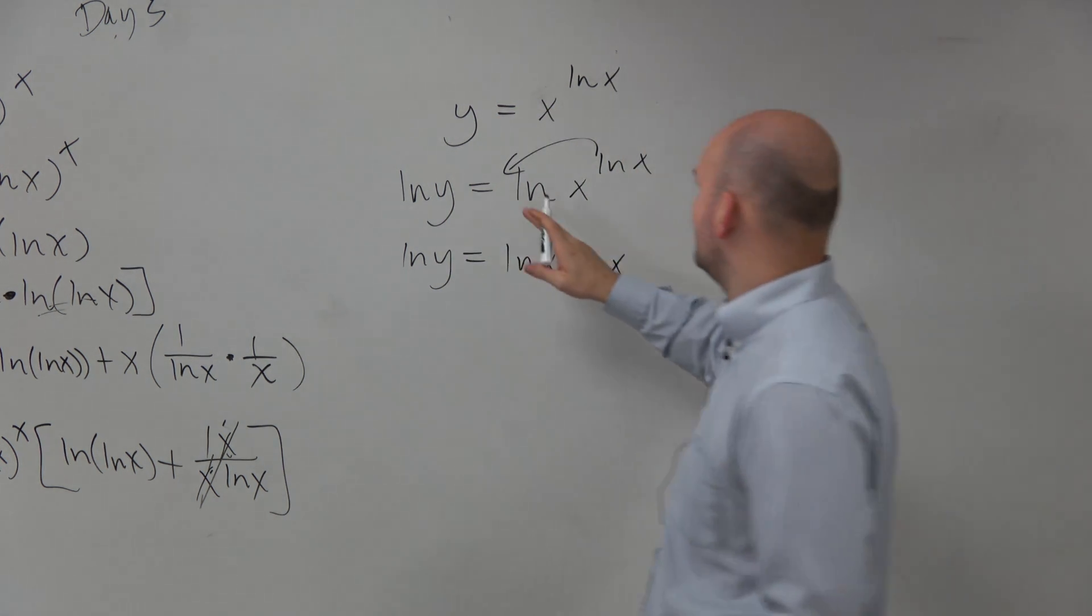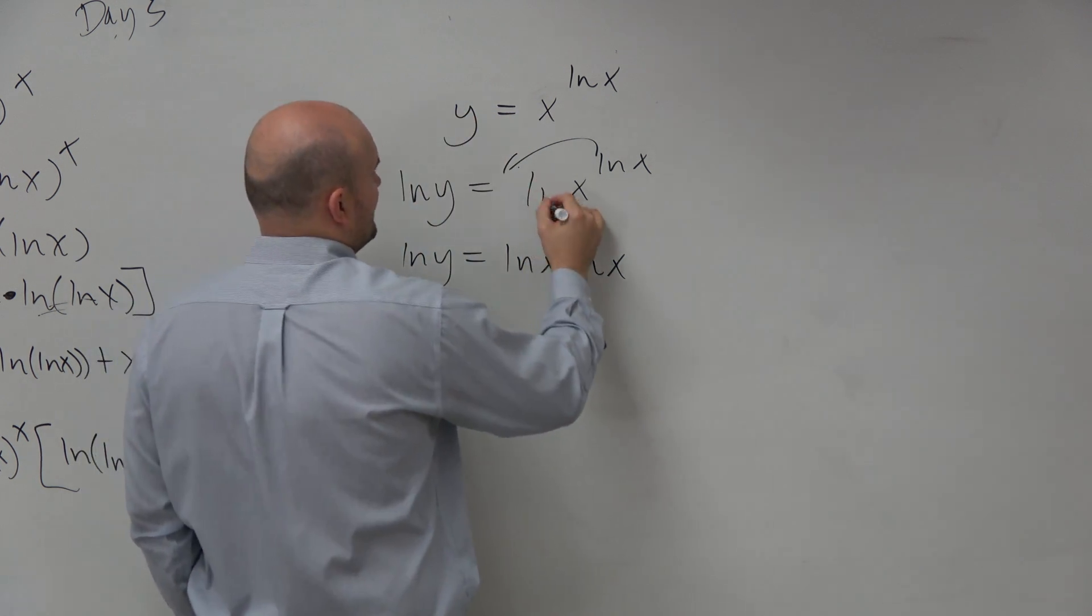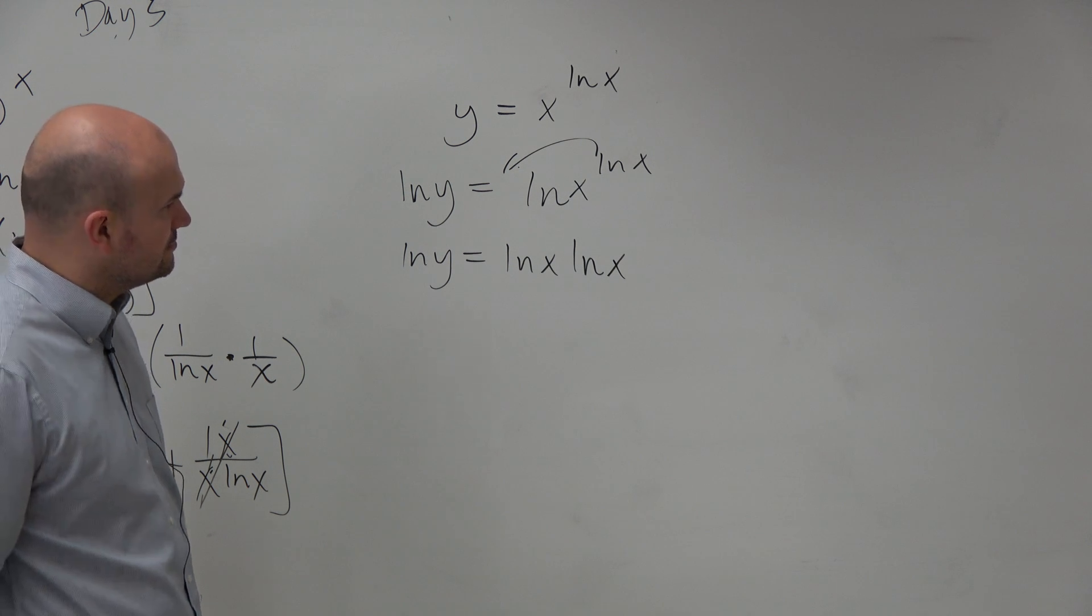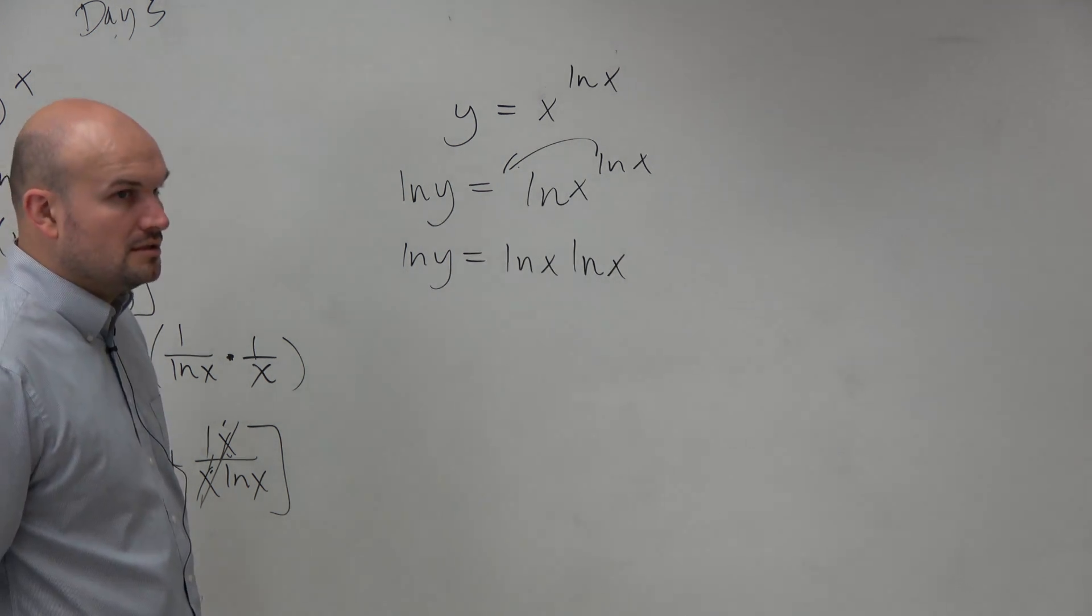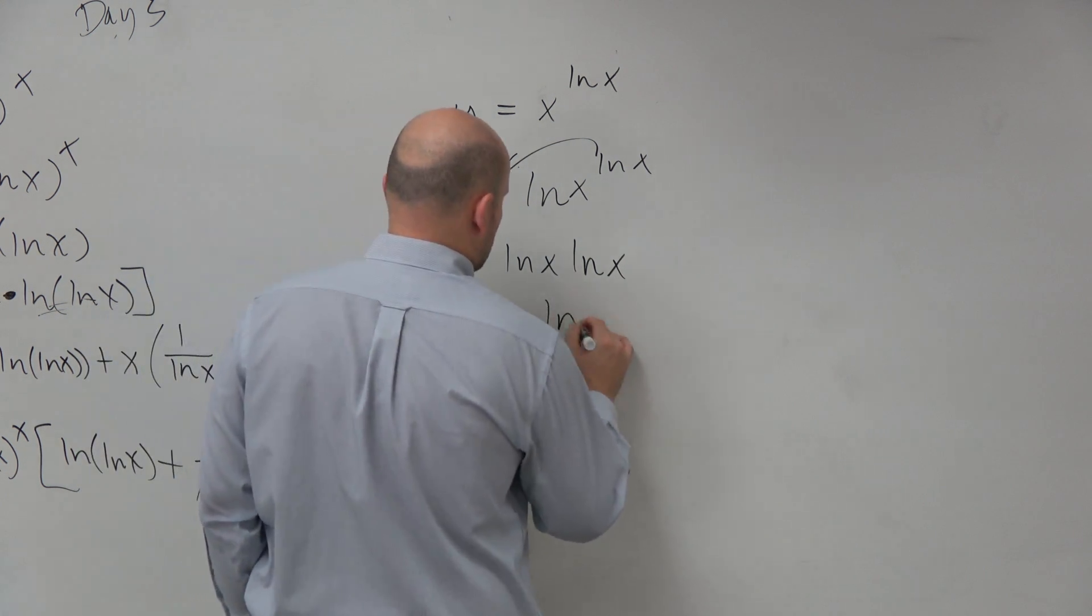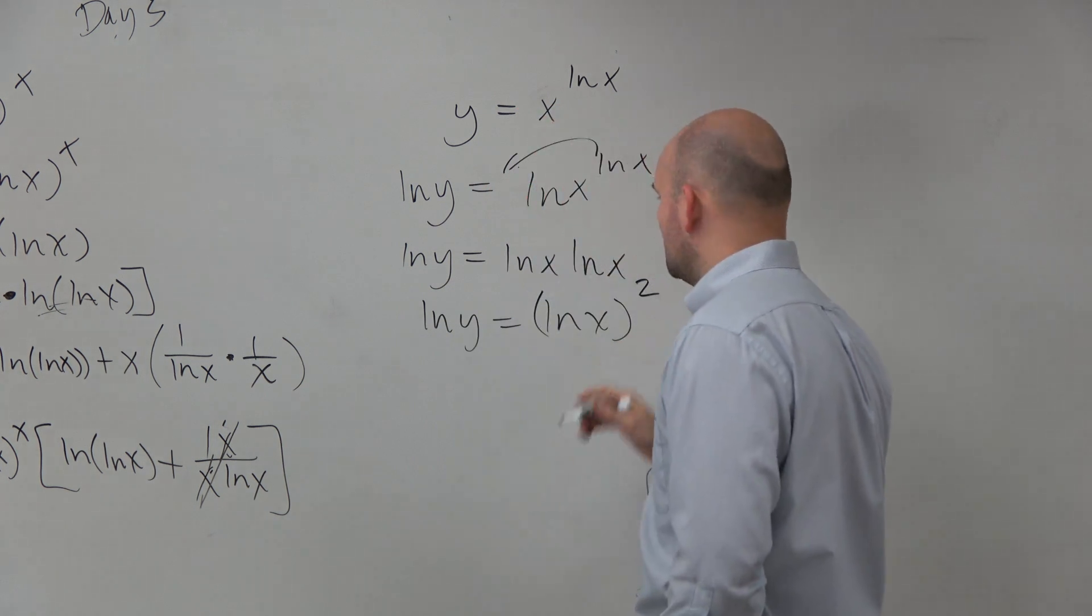Wait a minute, what did I do? Why did I have that? Sorry. Oh yeah, I took the ln of x. Correct? Which I could really write as ln of y equals ln of x squared.